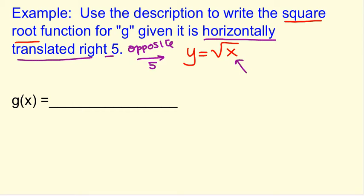We're going to subtract 5. So our g of x function is the square root of x minus 5. And that is the g of x function.